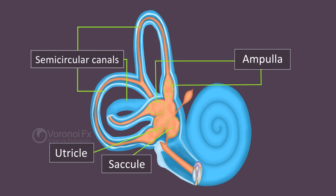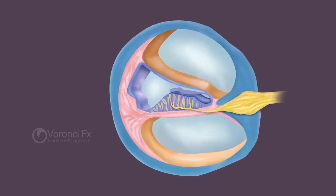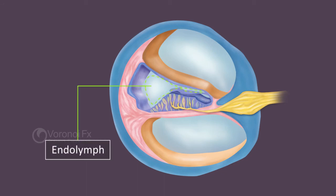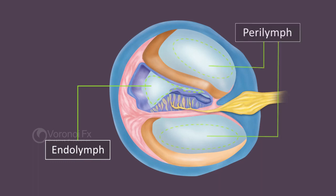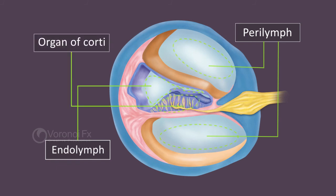The part of the inner ear that appears like the shell of a snail is the cochlea. It has three internal chambers. The middle chamber is filled with a fluid called endolymph, and the other two chambers with the fluid perilymph. The auditory receptors are seen in the organ of Corti, located in the middle chamber.